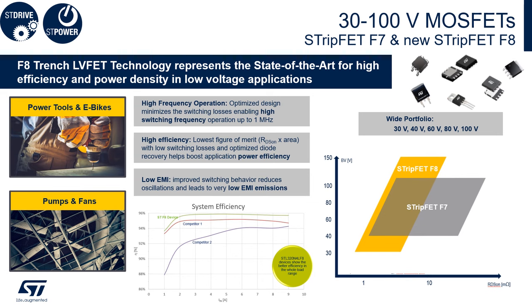For the power stage, we have the STRIPFET F7 and the new STRIPFET F8. Both product families complement each other and are scalable from 30 volt up to 100 volt. We recommend these products for motor control thanks to their great EMI behavior and high efficiency — the F8 is best in class compared to competition in terms of system efficiency. Almost all of our evaluation boards are equipped with these MOSFETs. Target applications range from power tools to e-bikes, pumps and fans, and even forklifts.